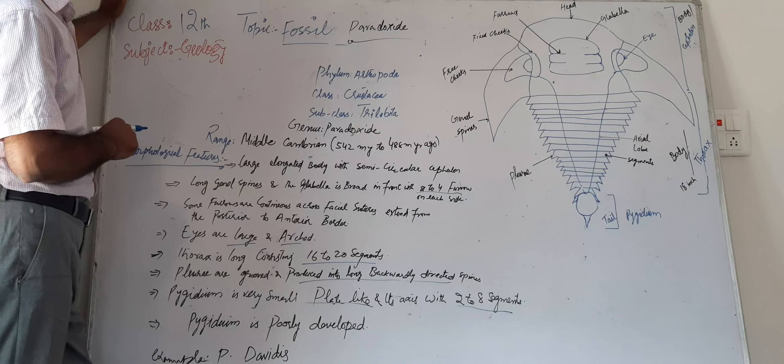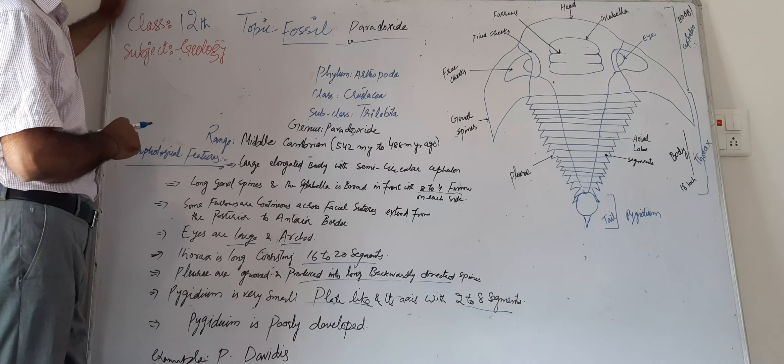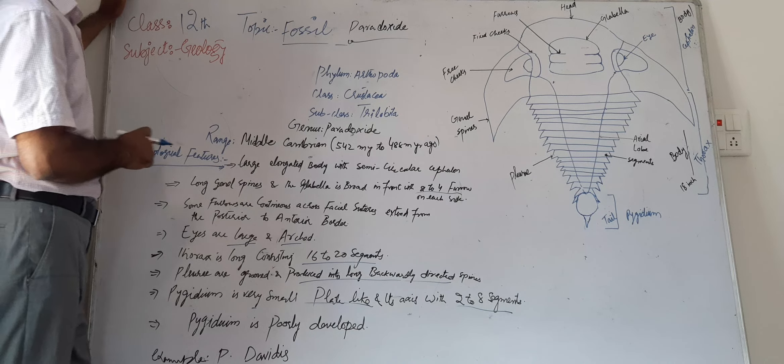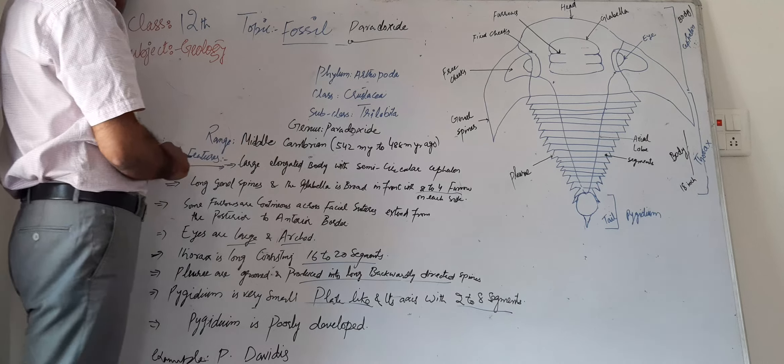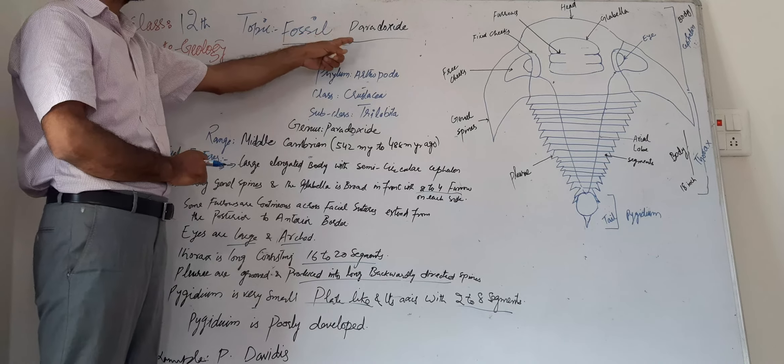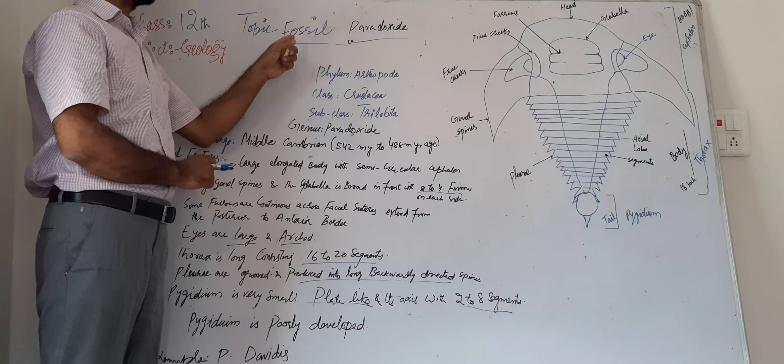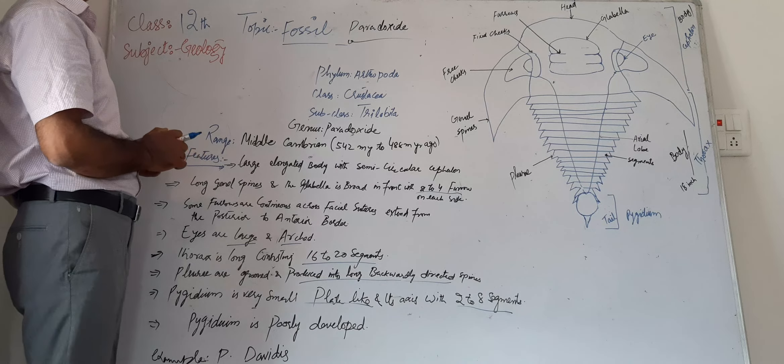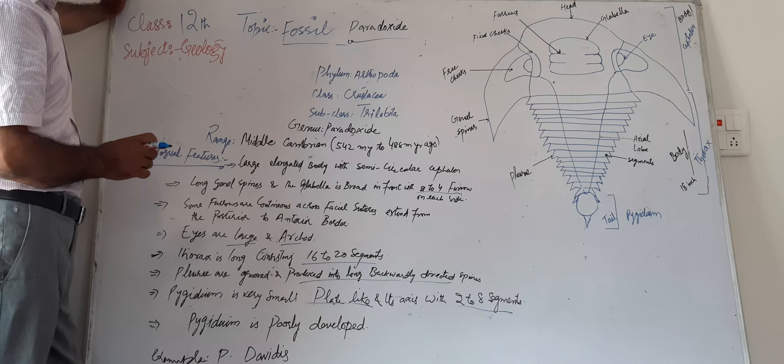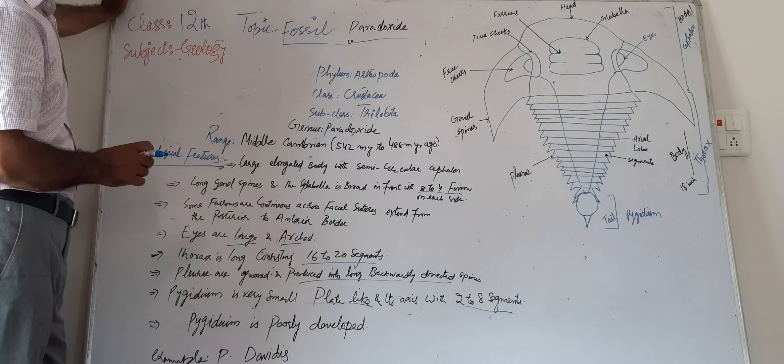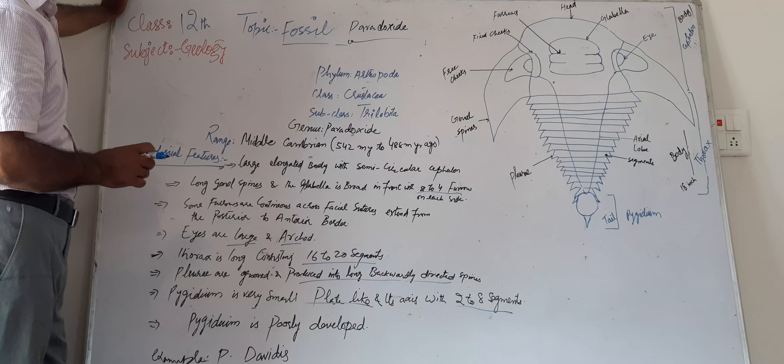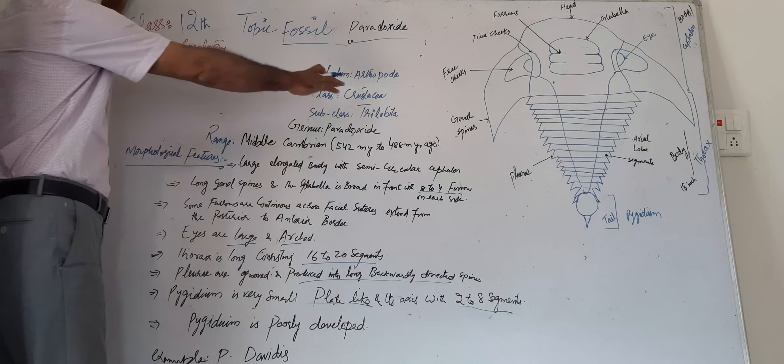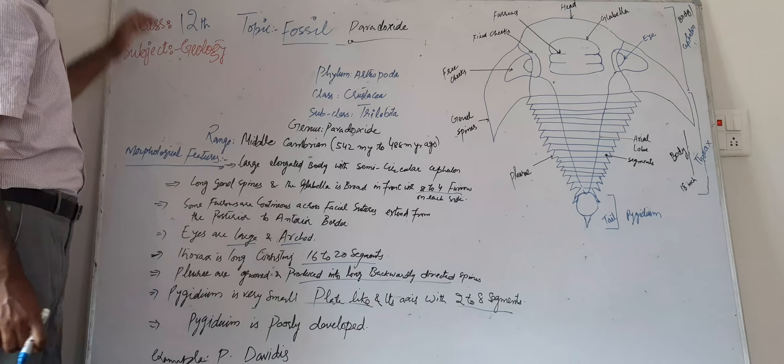In this unit we have discussed Trilobita, Lamellibranchia, Brachiopoda, and one of the fossils which belongs to the subclass Trilobita, Calymene. The next one is the pack fossil Paradoxides, which belongs to subclass Trilobita. The phylum of this fossil Paradoxides is Arthropoda, its class is Crustacea, its subclass is Trilobita, and genus is Paradoxides.